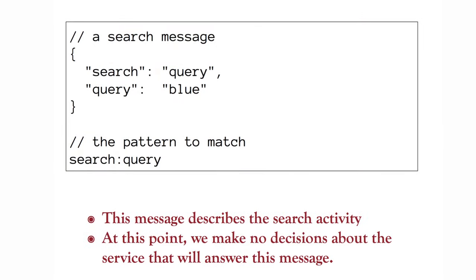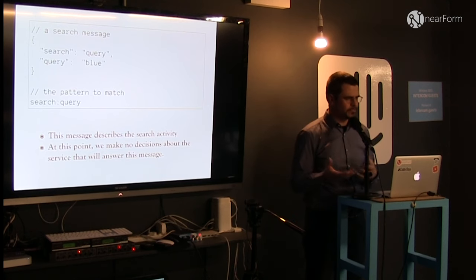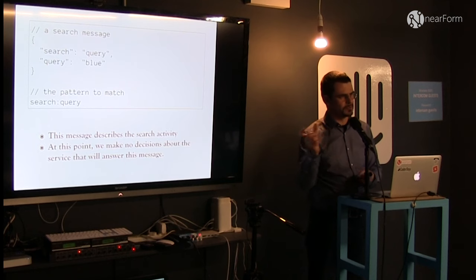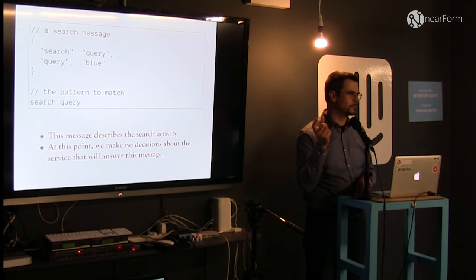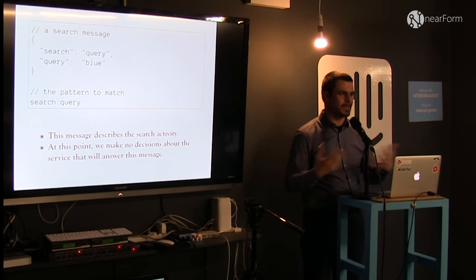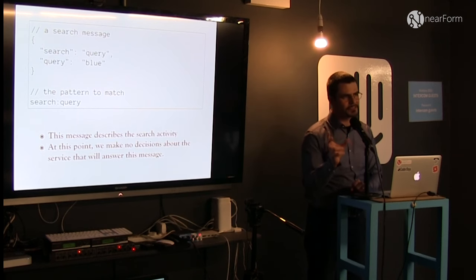This system is very message-oriented. Here's an example message — a search query, just a JSON document. I've hard-coded a name-value pair 'search equals query.' Any search message always has that hard-coded attribute — and that's my pattern. If I'm a search indexing microservice, I can say: I care about all messages that have 'search equal to query,' and I'll act on those ones and ignore everything else. That defines the pattern matching part of this approach.